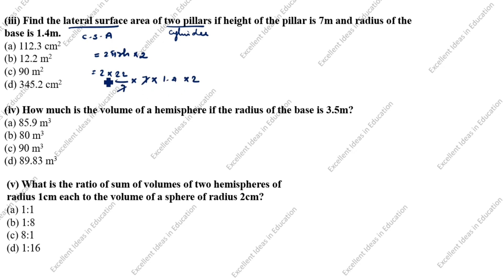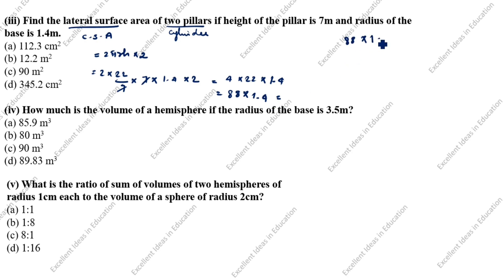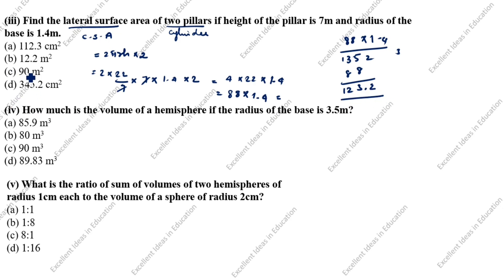The 7s cancel. 2 × 2 = 4. So 4 × 22 × 1.4 = 88 × 1.4 = 123.2 square meters. B is the answer.